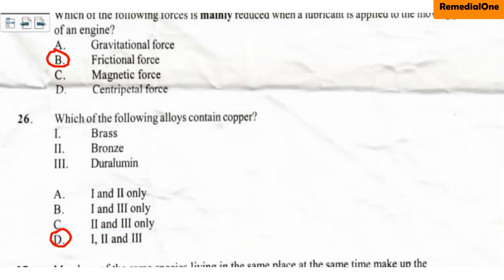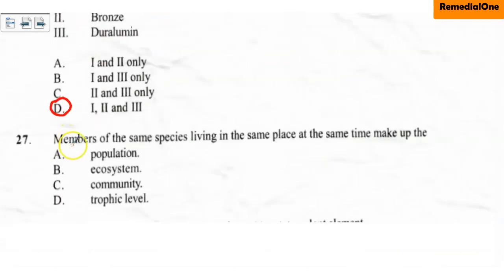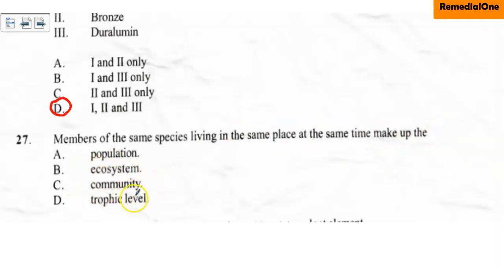Question number 27: Members of the same species living in the same place at the same time make up — A. Population, B. Ecosystem, C. Community, D. Trophic level. The correct option here is option A. For example, if you have human beings — members of the same species — living in the same place at the same time, they make up the population of human beings. So the correct option is Population.